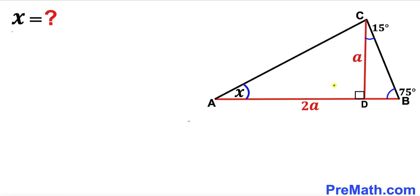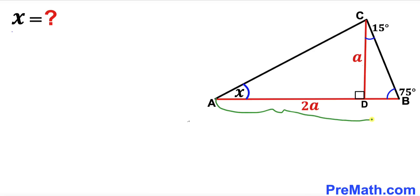In this video we have a right triangle ADC inside the bigger triangle ABC, such that segment CD is A units, segment AB is 2A, angle DBC is 75 degrees, angle BCD is 15 degrees, and angle CAD is represented by X. Our task is to calculate angle X.